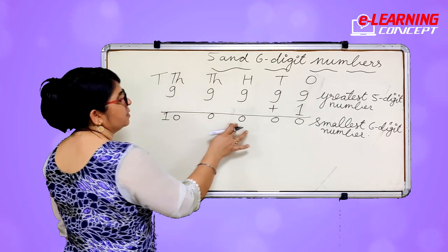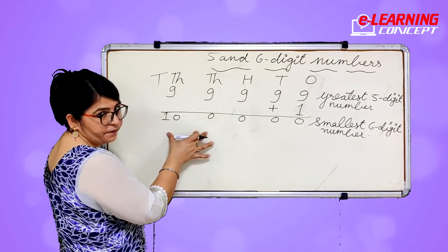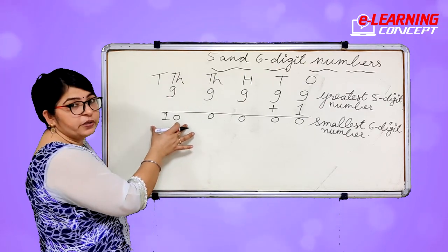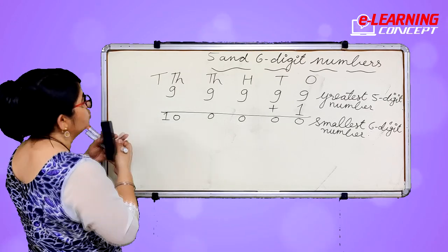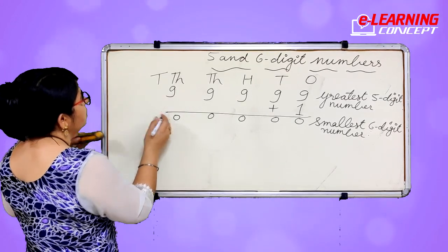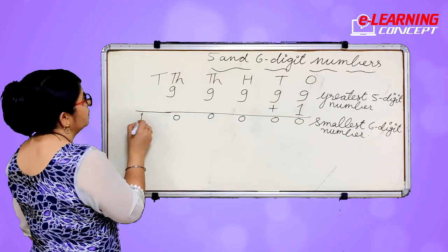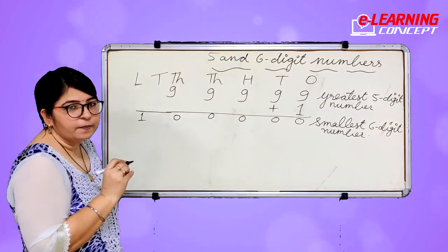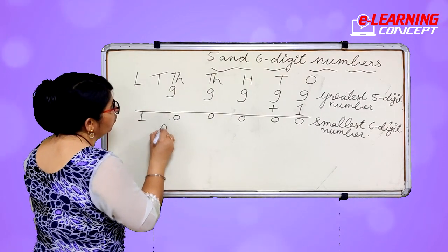One, ten, hundred, thousand, ten thousand, lakh — this is one lakh. We cannot write two numbers at one place, so we will shift one number to the left place. This new place will be the lakh place. We read it as one lakh.